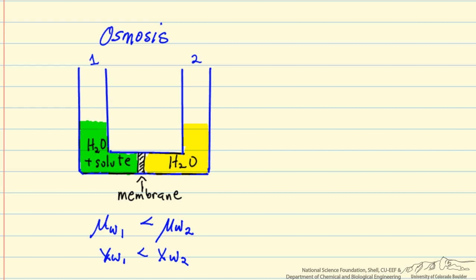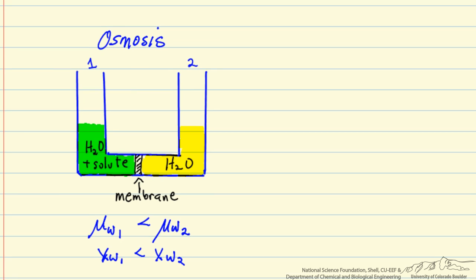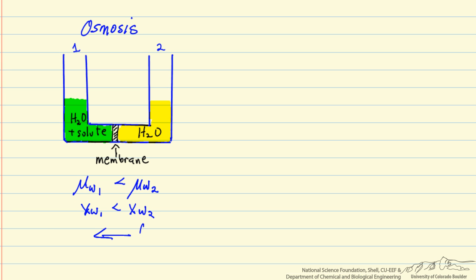As a result, we have a driving force for permeation. We are going to see a flux of water across the membrane from the right side to the left side, to try and equalize the chemical potentials. We can also write this as: the fugacity of water on the left side is less than the fugacity of water on the right side.